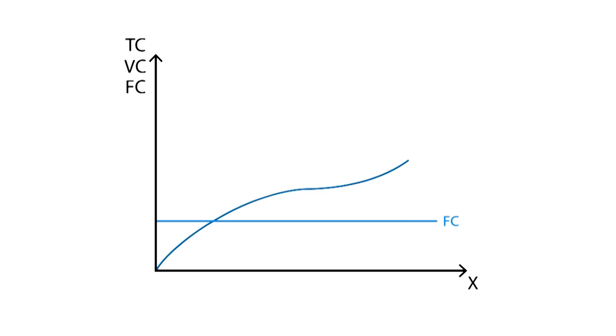Variable costs change with the level of output. The shape of this curve will depend on a number of things, such as factory dimensions, energy prices, or the cost of extra labor hours. Total cost is calculated by adding these two curves together.